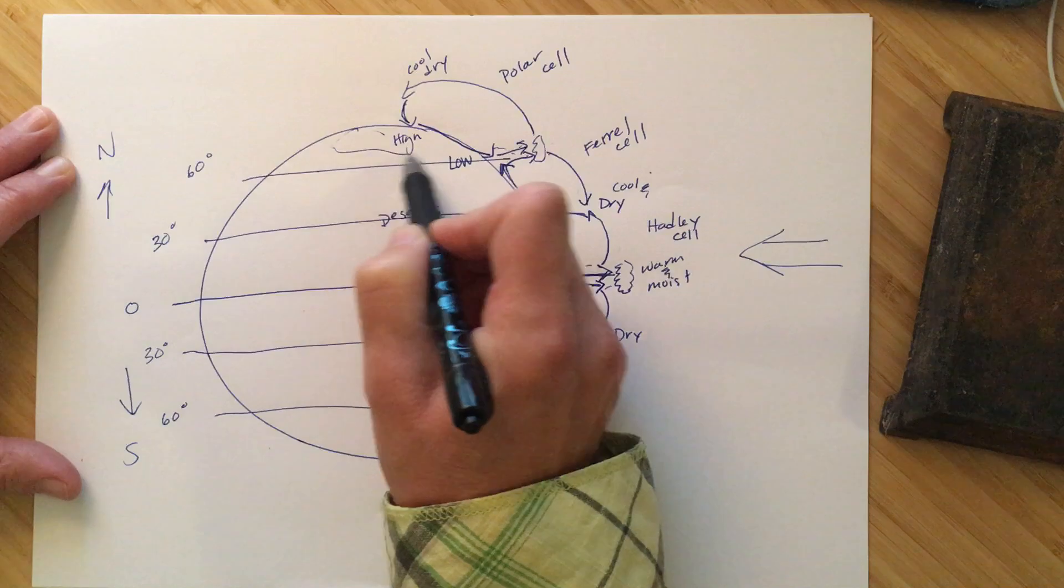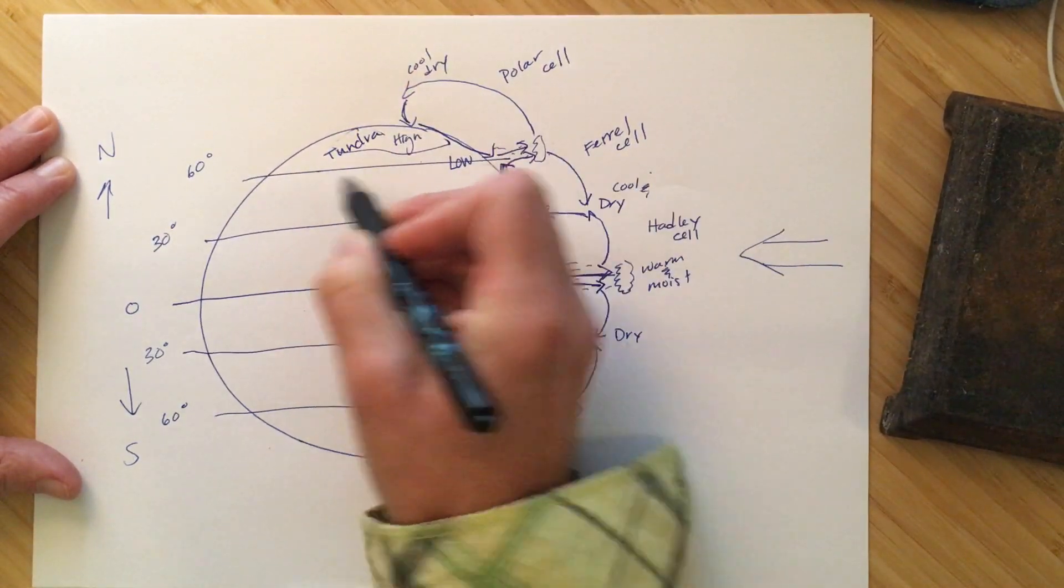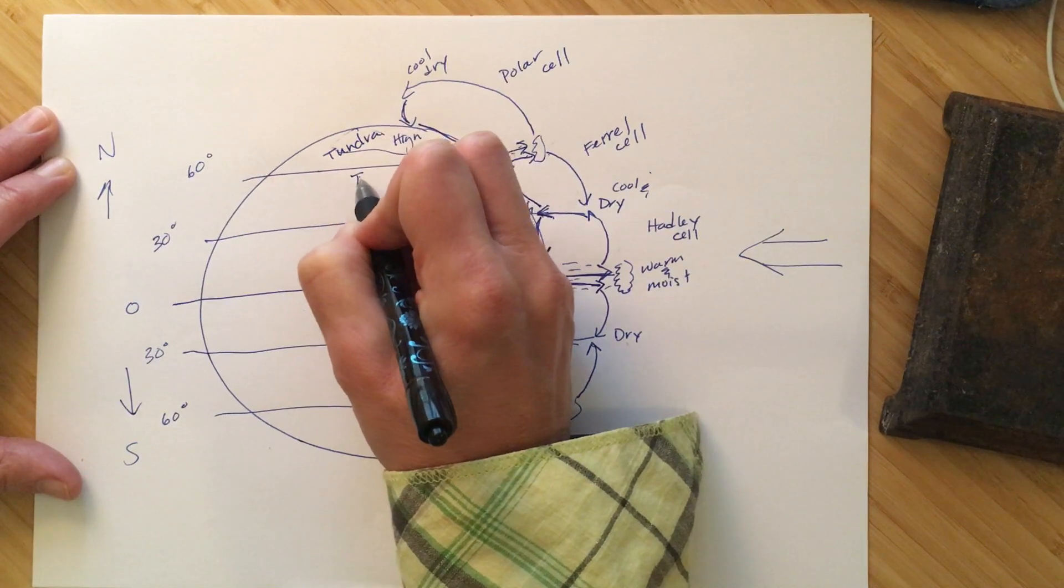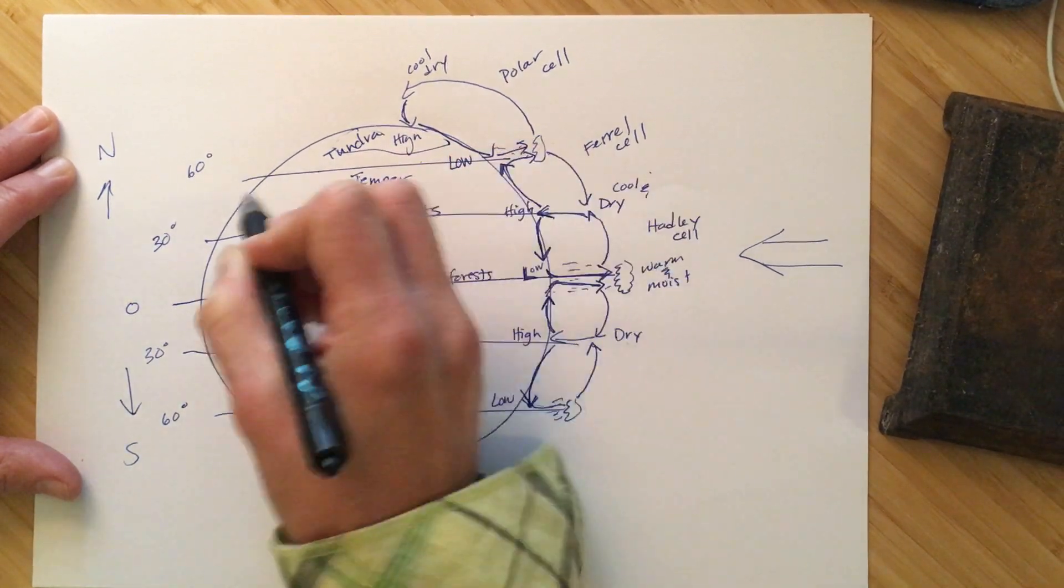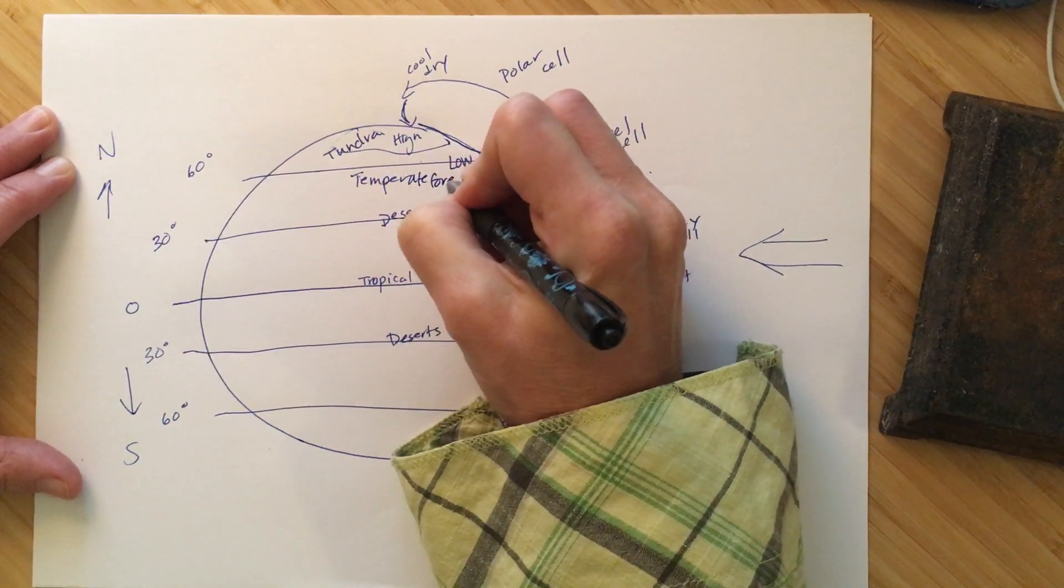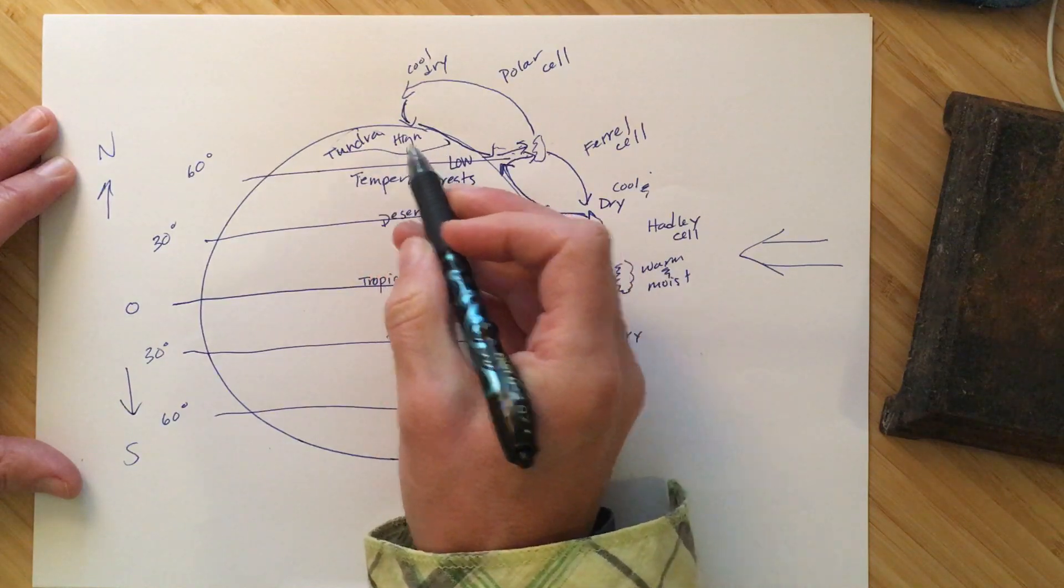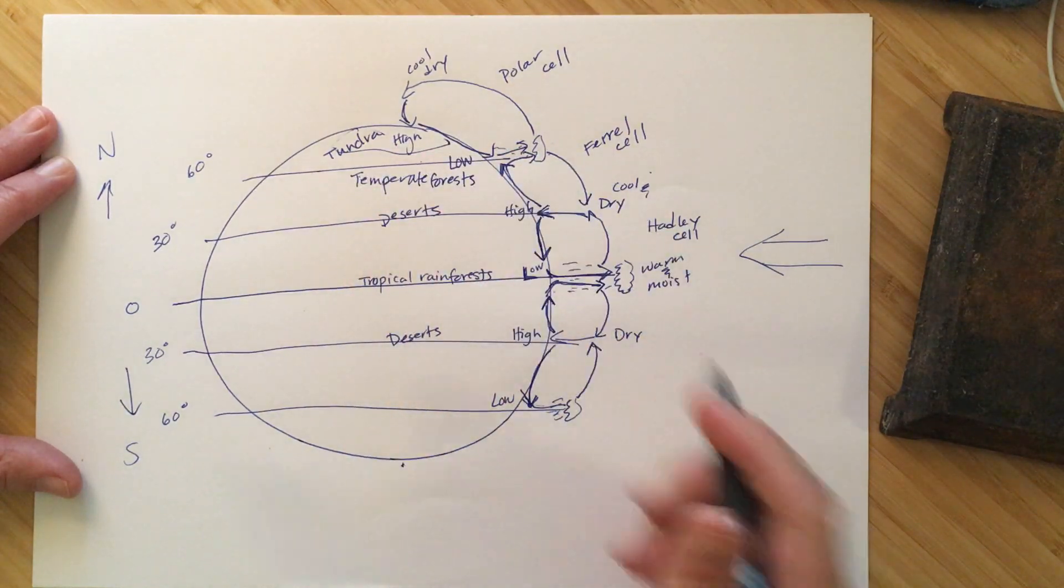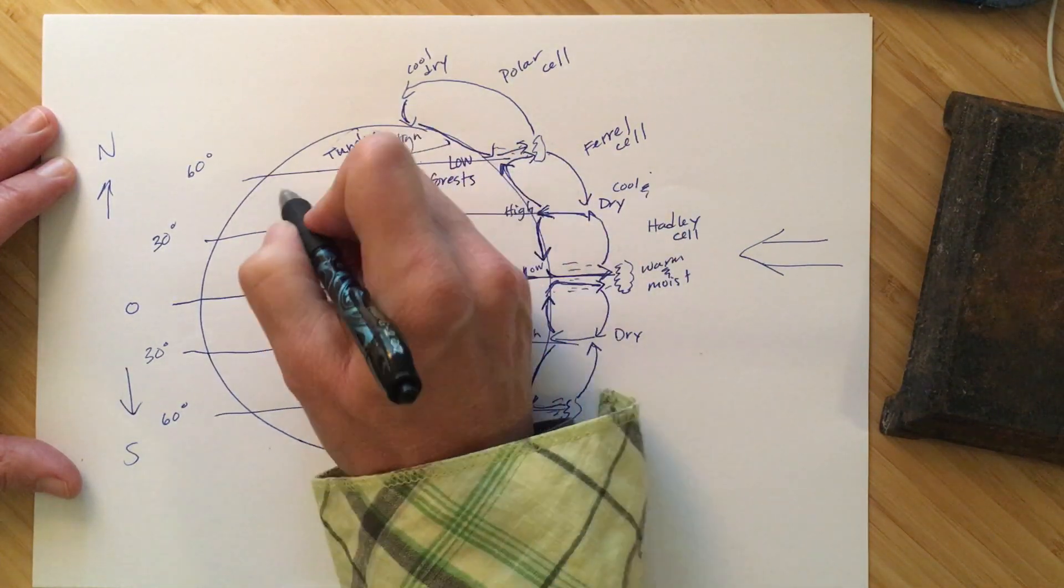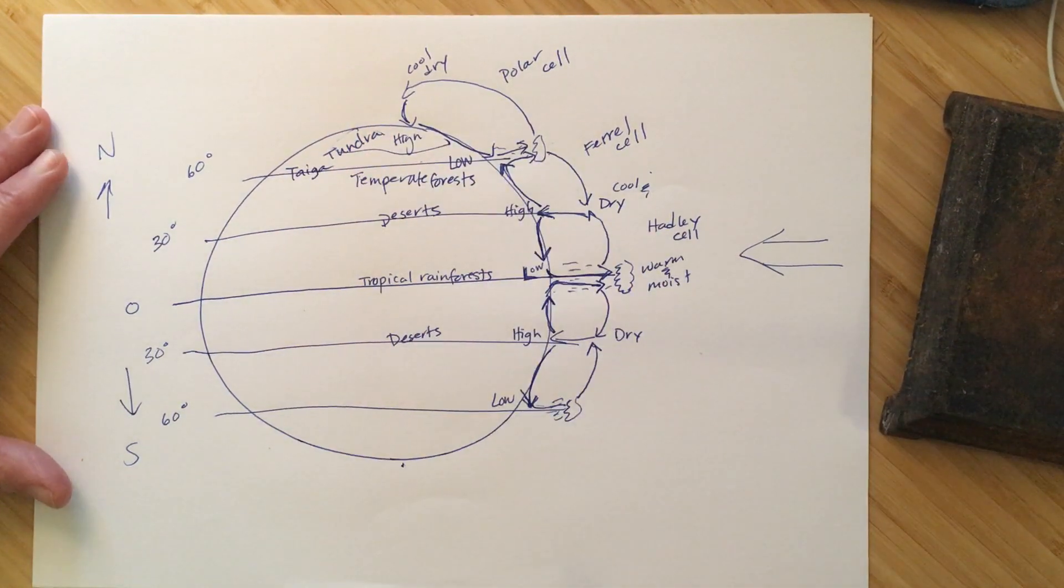And you can imagine cool, dry air. Well, that's going to be things like tundra. Right? And this is going to be more of our, you know, temperate forests along, you know, 60 and a little bit lower, because it gets more moisture. So the tundra and the polar regions tend to be quite dry compared to, say, the temperate forest or the boreal forest. The taigas are along here, too.